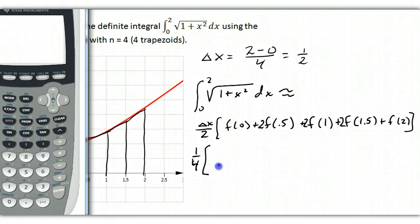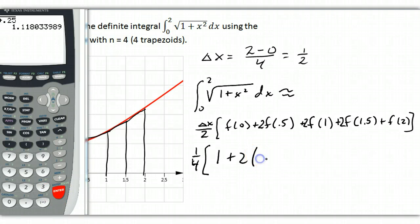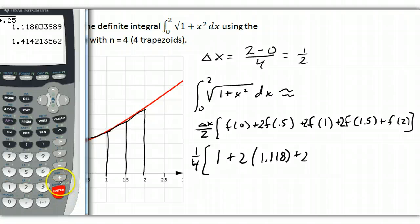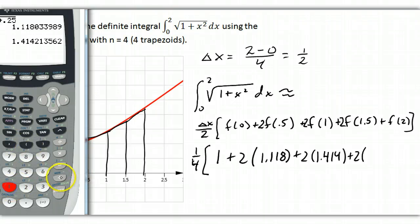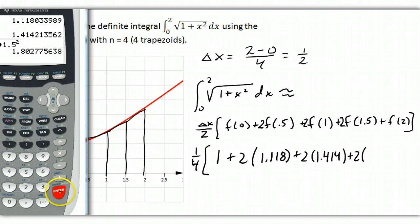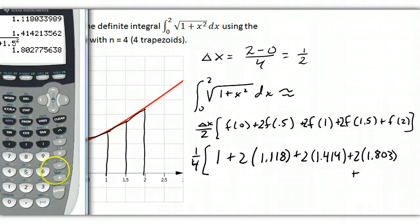So when I put in 0, I'm going to get the square root of 1, which is 1. And then F of 0.5 is going to be the square root of 1 plus 0.25, and that's going to be 1.118 plus twice F of 1 is 1 plus 1, which is the square root of 2, which is 1.414 plus twice F of 1.5, so I'm going to do the square root, 1 plus 1.5 squared, and we get 1.803 plus F of 2, that's going to be the square root of 5, and that's multiplied by 1, so it's just 2.236.